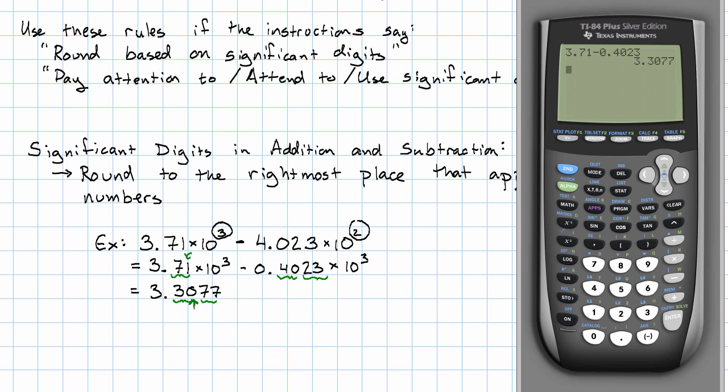So really, the most I'm entitled to is this second digit after the decimal point. I'm going to round to that place and I'll get 3.31×10³.